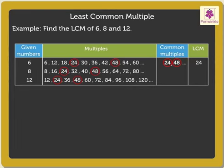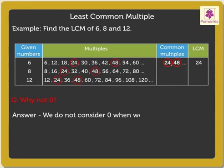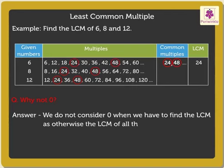Now kids, I am sure all of you must be wondering why we did not list 0 as a multiple for any of the numbers. That is because we do not consider 0 when we have to find the LCM, as otherwise the LCM of all the numbers would always be 0.